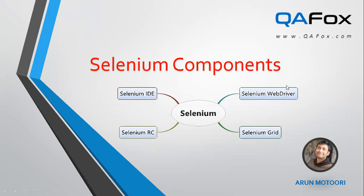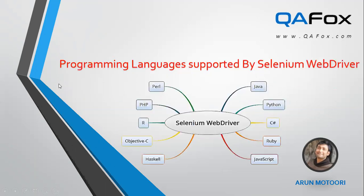Selenium WebDriver is currently the main and most important Selenium component. Everyone is using and focusing on Selenium WebDriver. In this session, I'm going to explain the different programming languages supported by Selenium WebDriver. As you can see in this slide, there are several languages supported: Java, Python, C#, Ruby, JavaScript, Perl, PHP, R, Objective-C, and Haskell — around 10 programming languages.